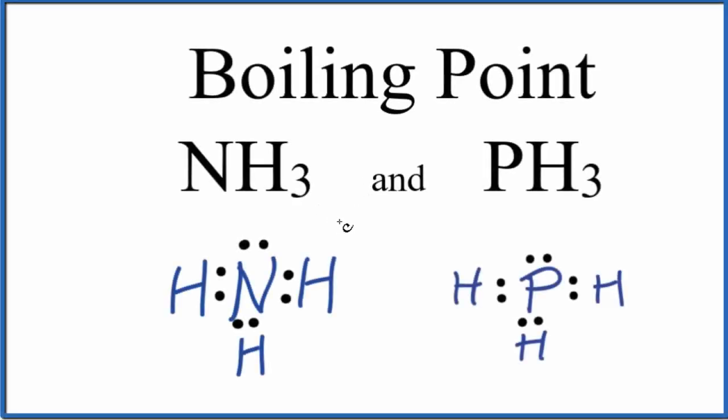Let's take a look at the difference in the boiling point for NH3 and PH3. First off, this nitrogen and this phosphorus atom, they're in the same group on the periodic table. And we have the same Lewis structure and the same molecular geometry for both NH3 and PH3.